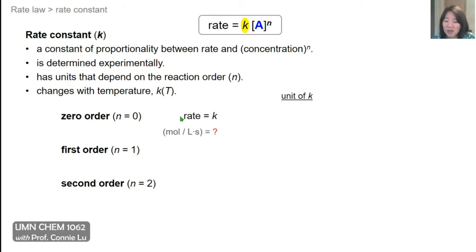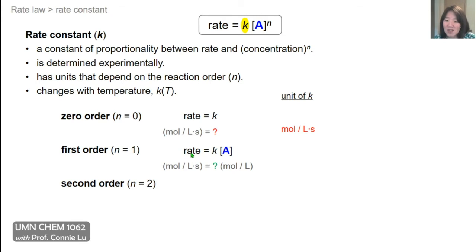For zeroth order, rate equals K, and since the units of rate are concentration per unit time — typically moles per liter per second — K must have those same units: mol/(L·s). For first order, rate equals K times concentration of A. Setting the units equal on both sides, with concentration having units of mol/L, the only missing factor is 1/second. So the unit of K for a first order reaction is simply 1/s.